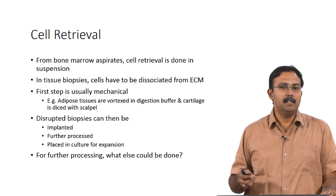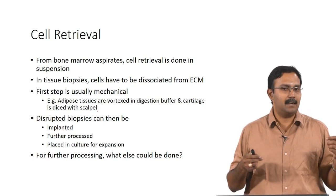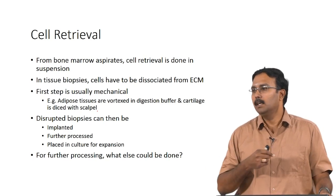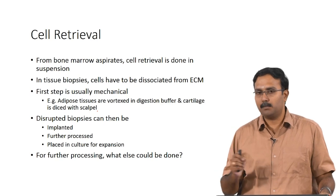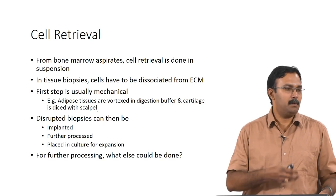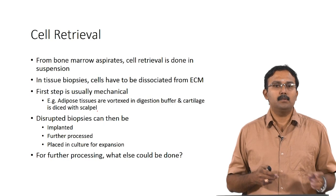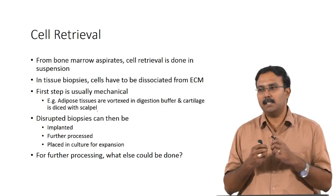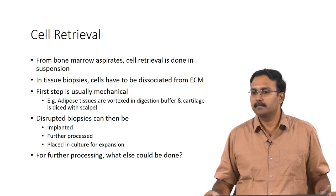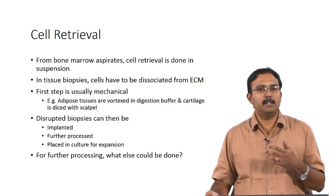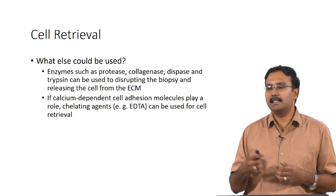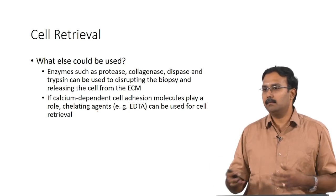The first step is usually mechanical — vortexing with digestion buffer or dicing with a scalpel — to remove as much ECM as possible. The disrupted biopsies could then be implanted, further processed, or placed in culture for expansion. After mechanical treatment, you can use collagenase or another protease enzyme to disrupt the ECM and release the cells from it.